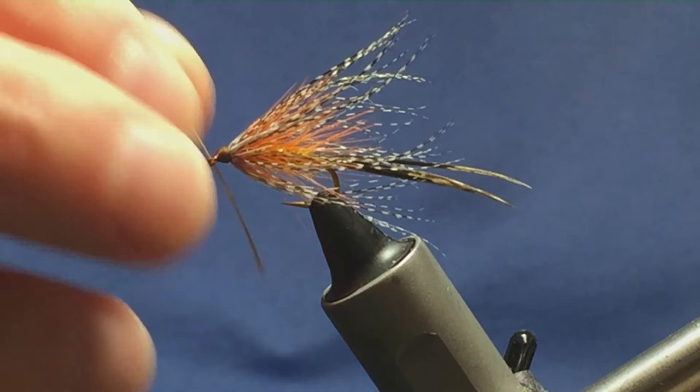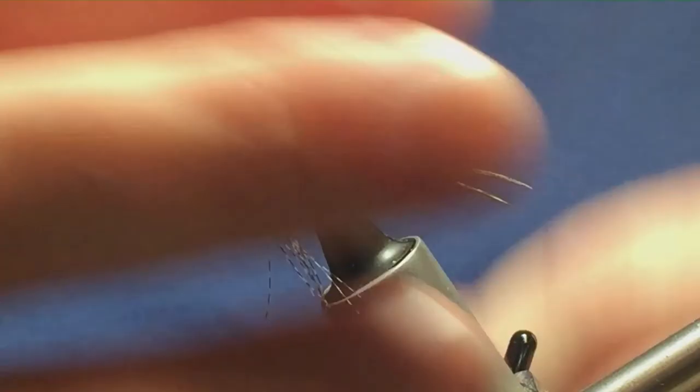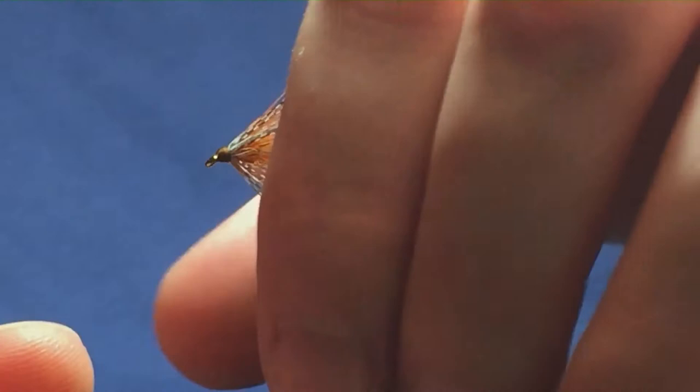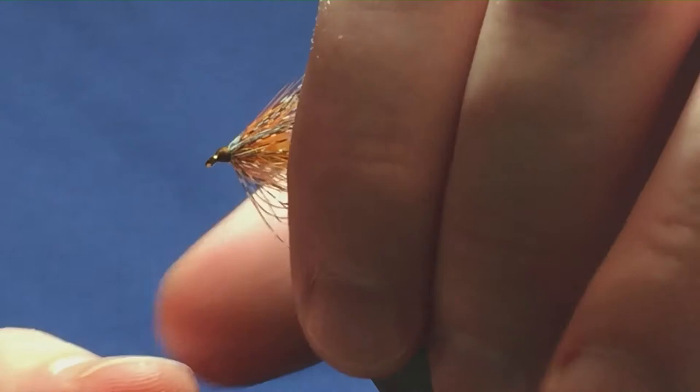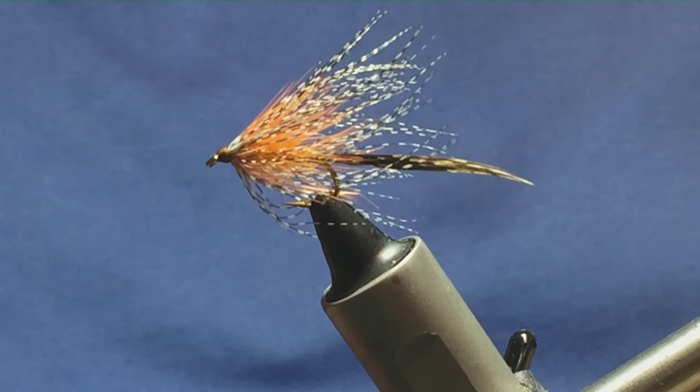There you go, it's just a wee gosling pattern. Good fly to have in your box if you fish the mayfly in the big Irish lochs. So look, give the fly a wee go. There's many different color combinations, you know, use your imagination, that's what fly tying's about. Give the fly a wee go and hopefully it can catch you a few fish.